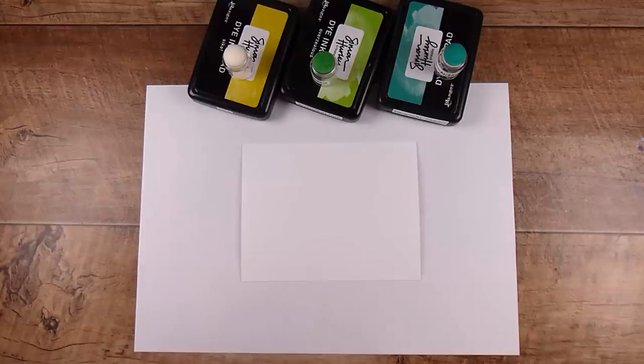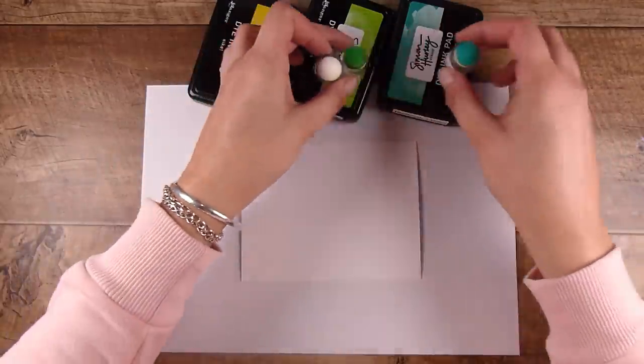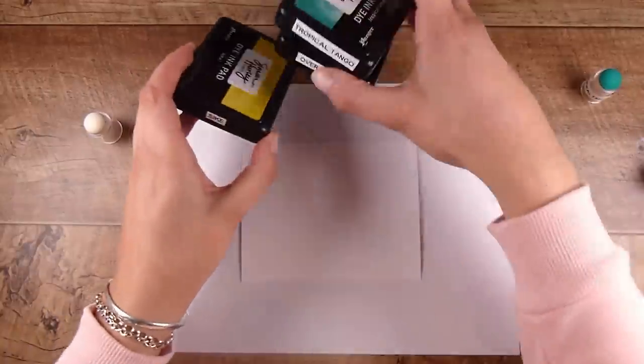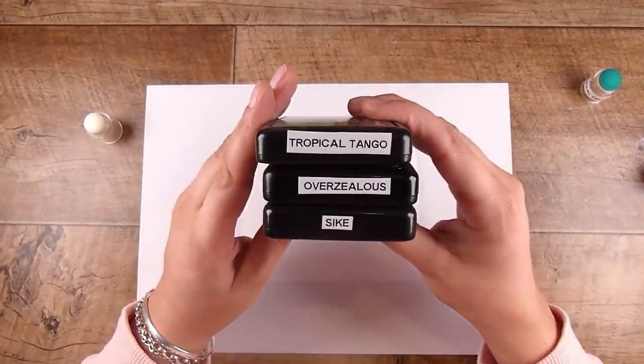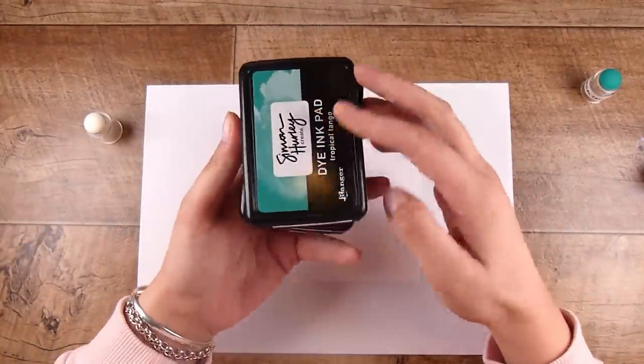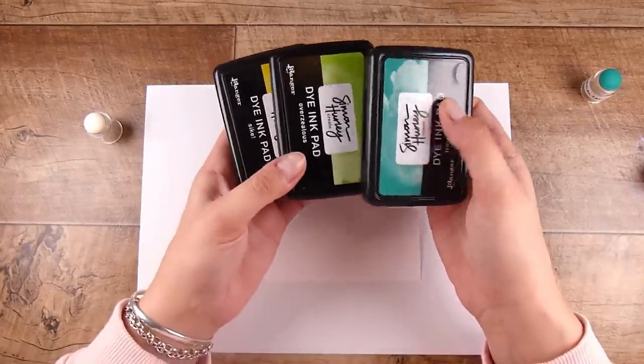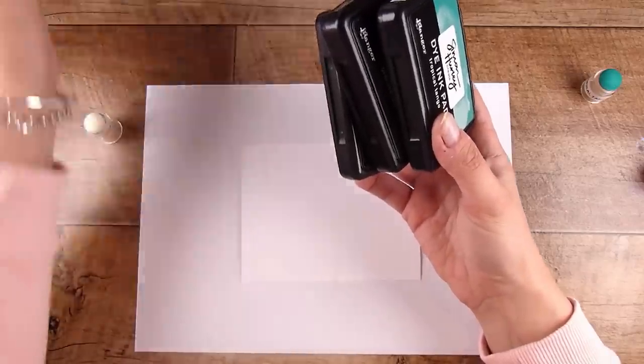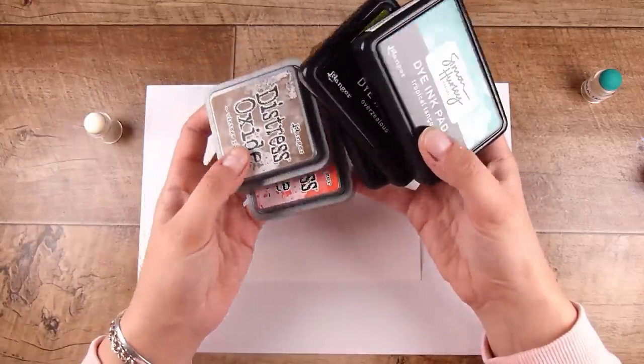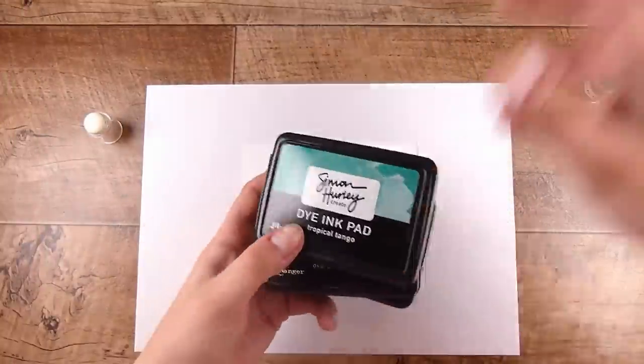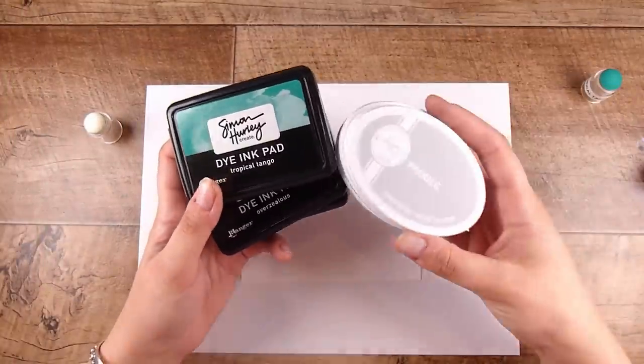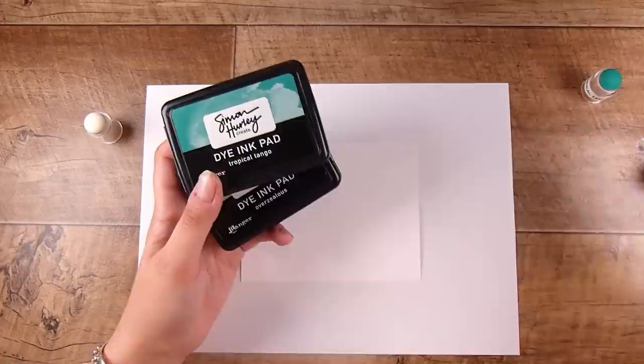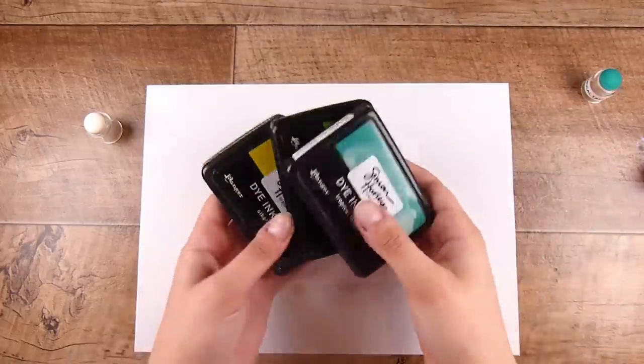It's simply stunning with not too much effort and you're going to see that here today with my ink blending. For this you are going to need some water reactive inks. Today I'm going to be using some Simon Hurley inks - I've got Tropical Tango, Overzealous, and some Psych, these are yellowy, greeny, tealy kind of colors. Water reactive is key, so you can use your Distress Oxides, your normal Distress Inks, Catherine Pooler inks, anything that is water reactive that's going to reactivate when you add water to it.